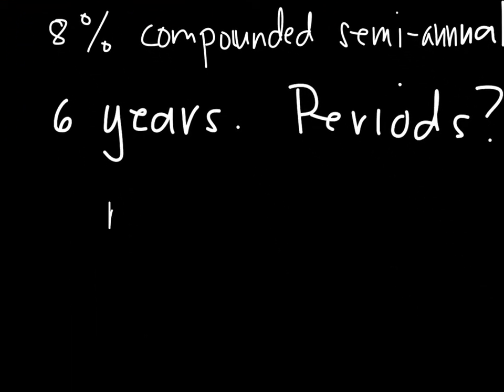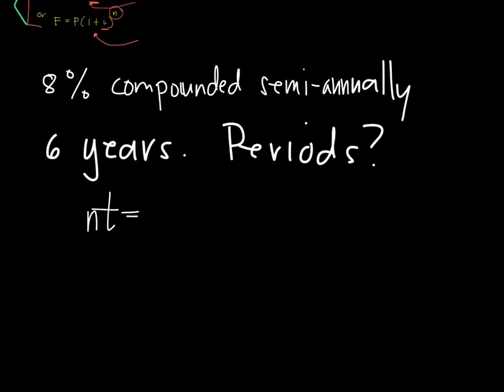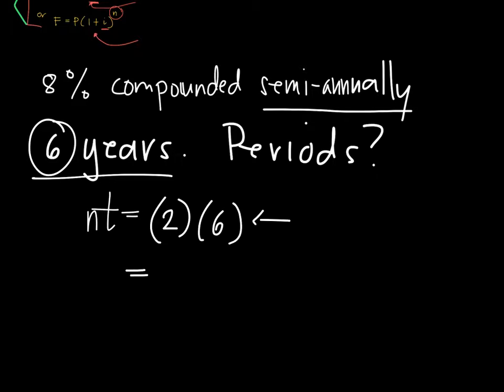So, we have NT which is equal to N is the number of times the interest is compounded. So, it's semi-annually, so it's twice a year. And then the amount will be compounded for 6 years. So, the time is 6. So, the number of period is 2 times 6 which is equal to 12. So, that's how you find the number of periods. It's not really that complicated.